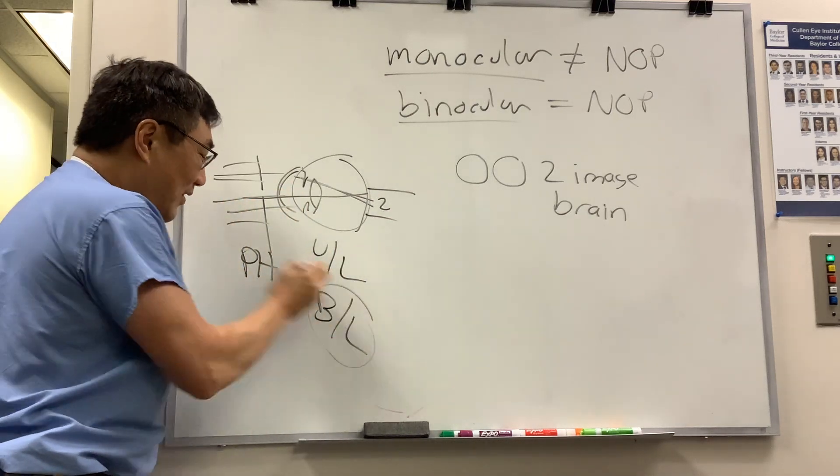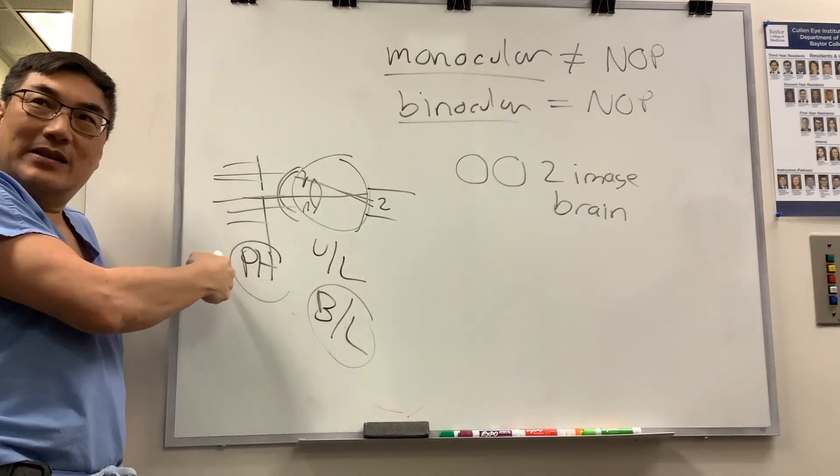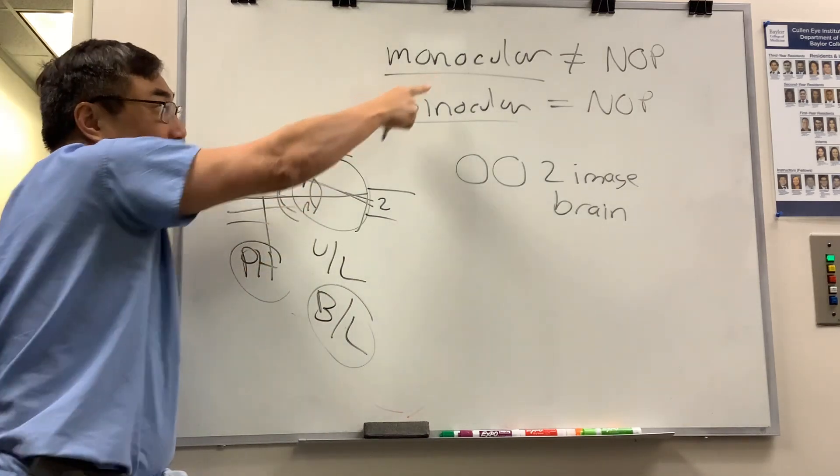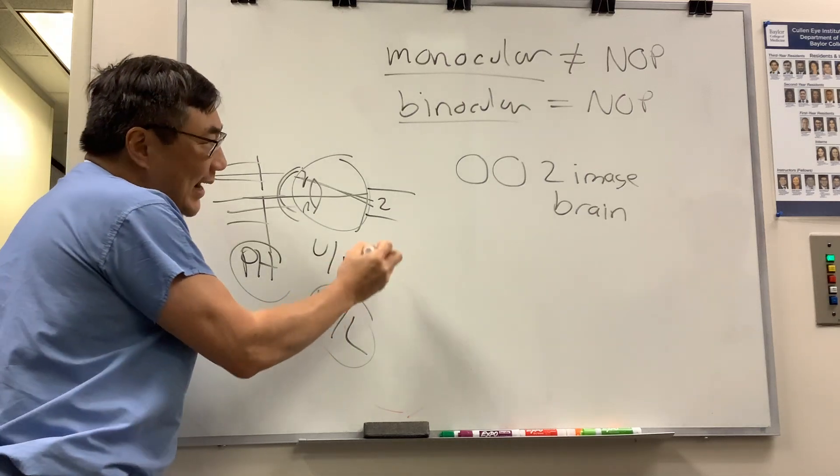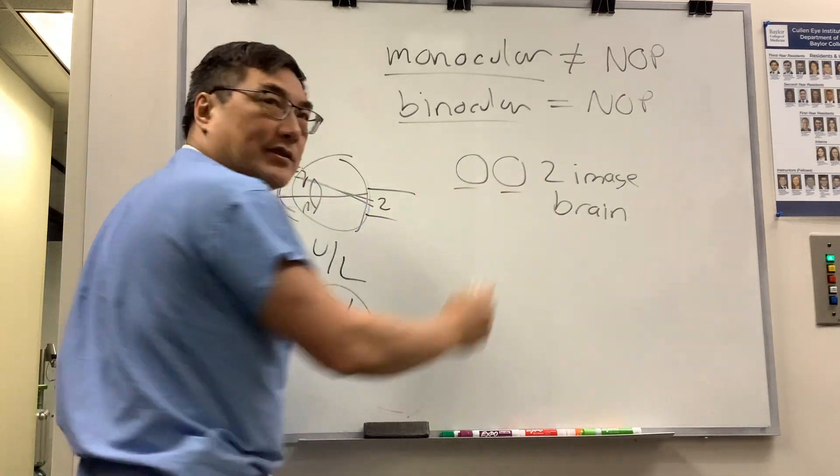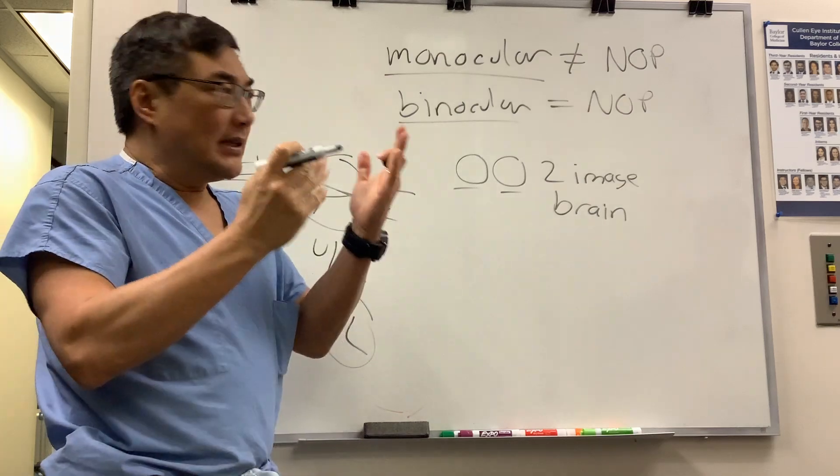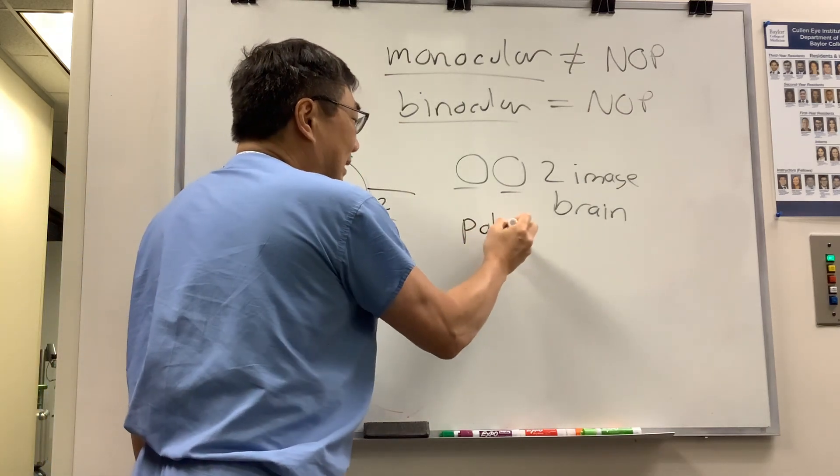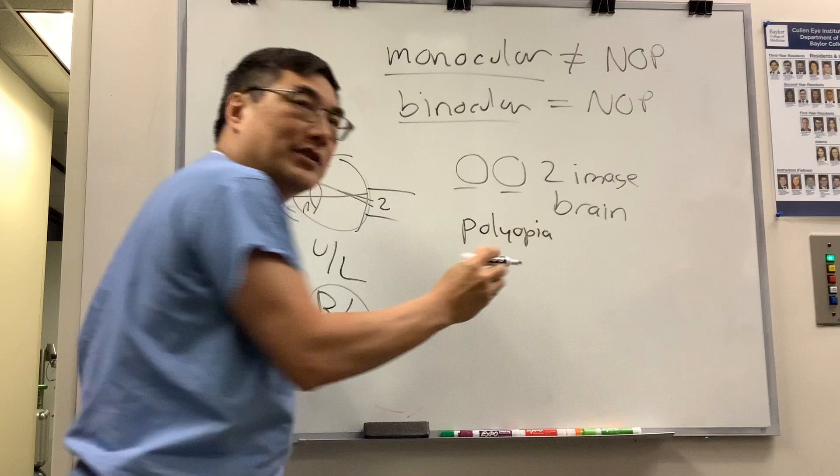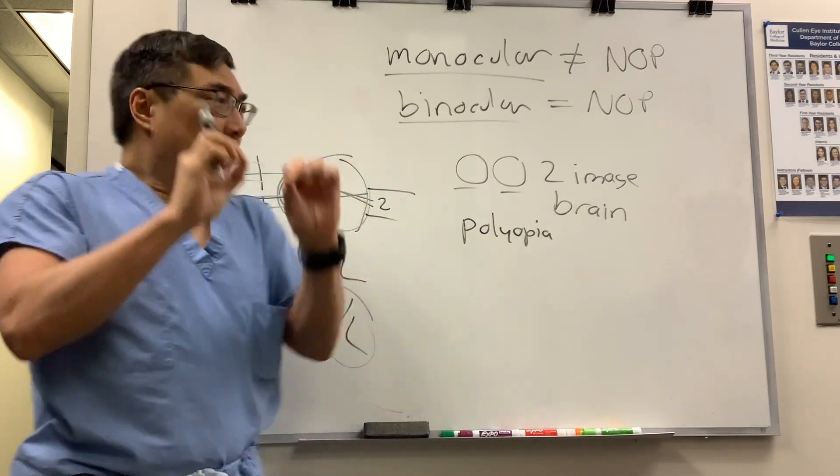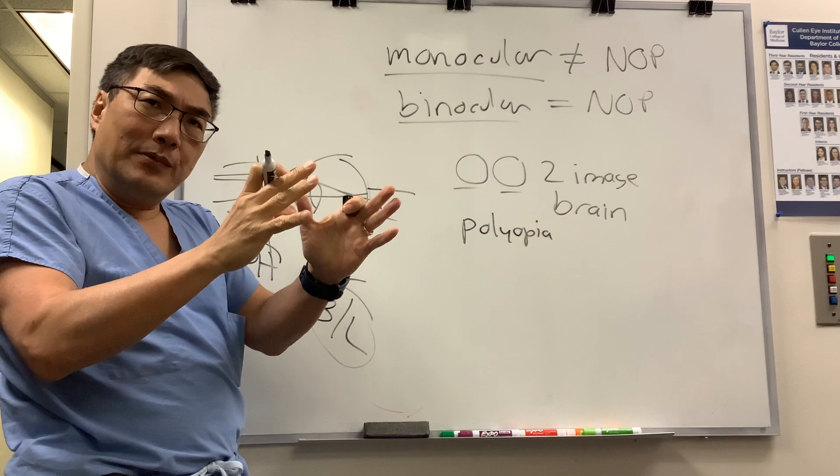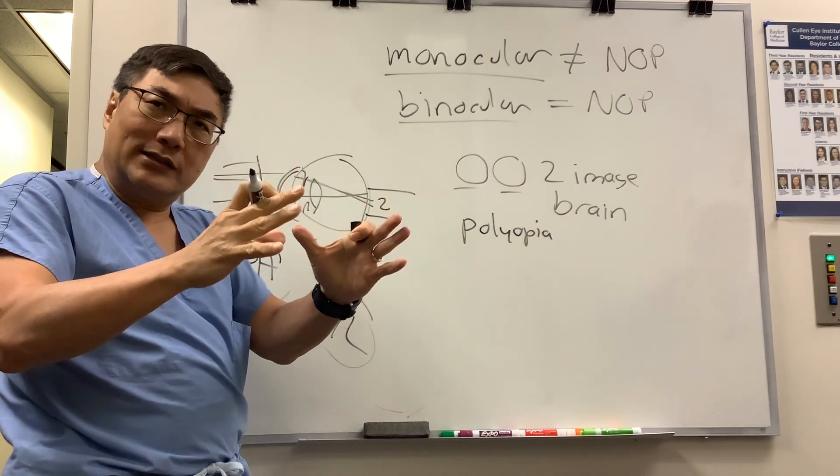Well, then bilateral with no pinhole improvement could still be neuro-op. The way that happens is you're making two images in your brain, and that means you have polyopia. You have two images in your brain. So if you have an occipital lobe or visual association cortex lesion, it can cause two images to occur.